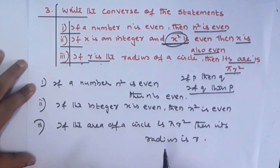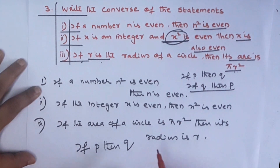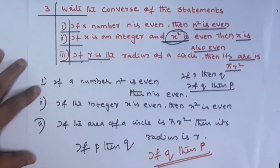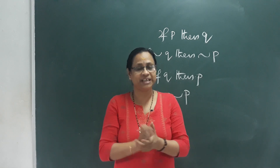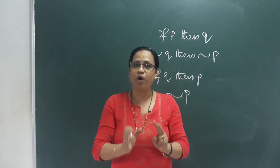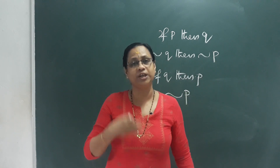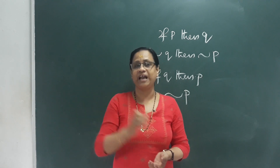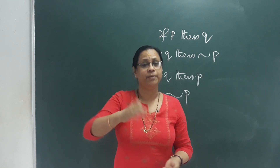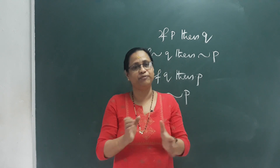Converse is simple: If P then Q becomes If Q then P. This is the Converse. We have now covered this chapter on Mathematical Reasoning — Negation, Contrapositive, and Converse. Note that proving root 2 or root 3 is irrational by contradiction is not in the syllabus, so this video is sufficient. Thank you.